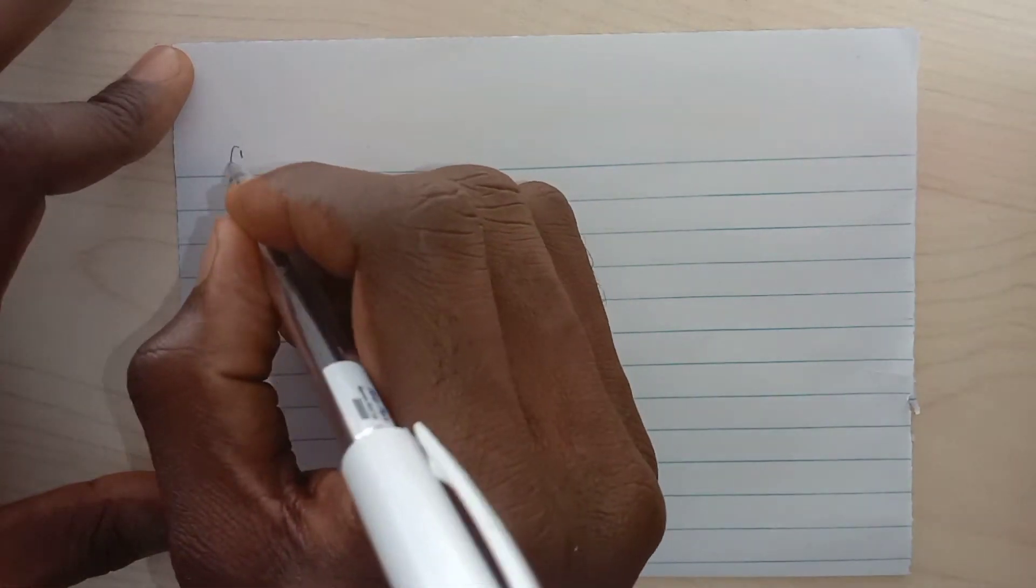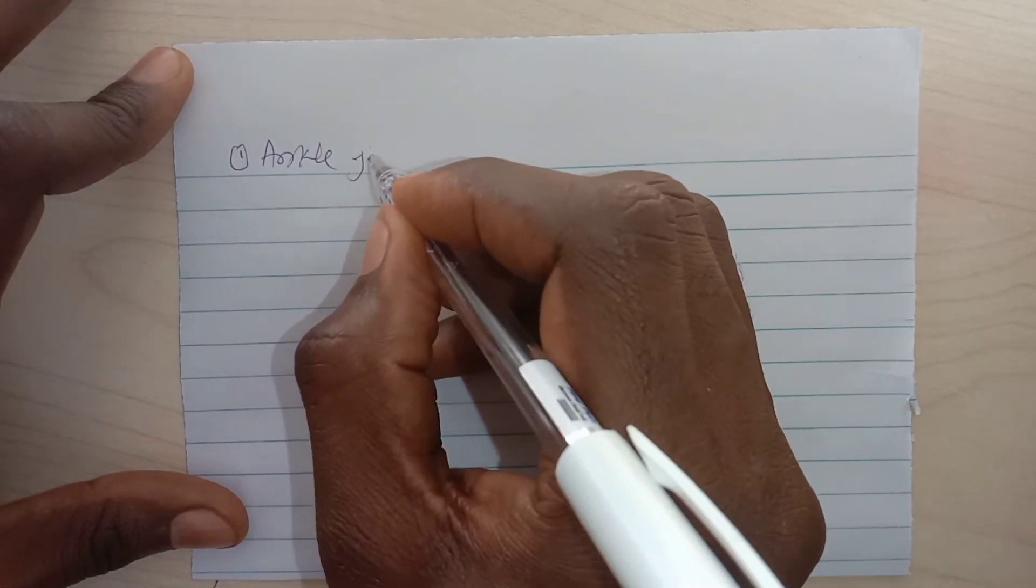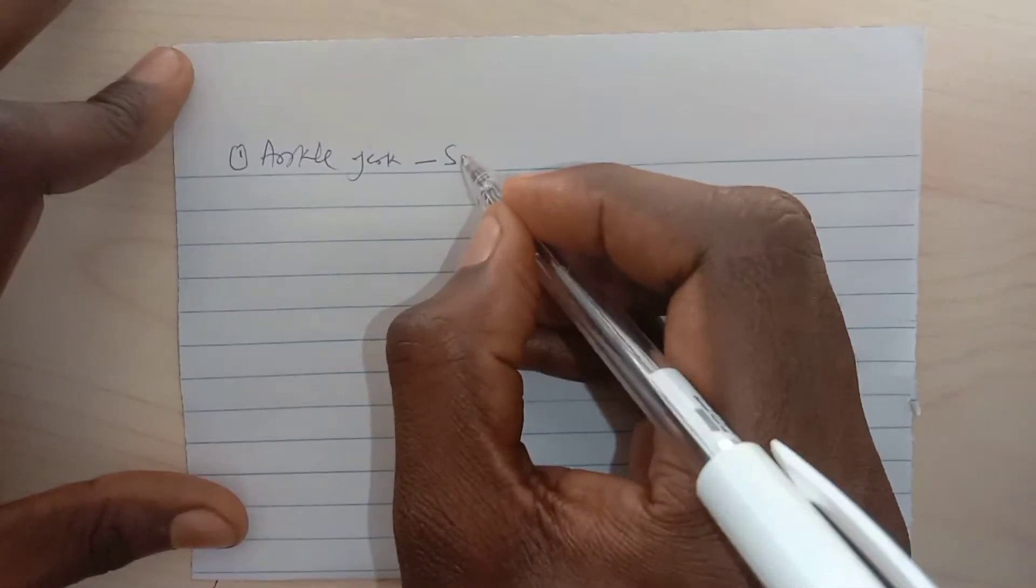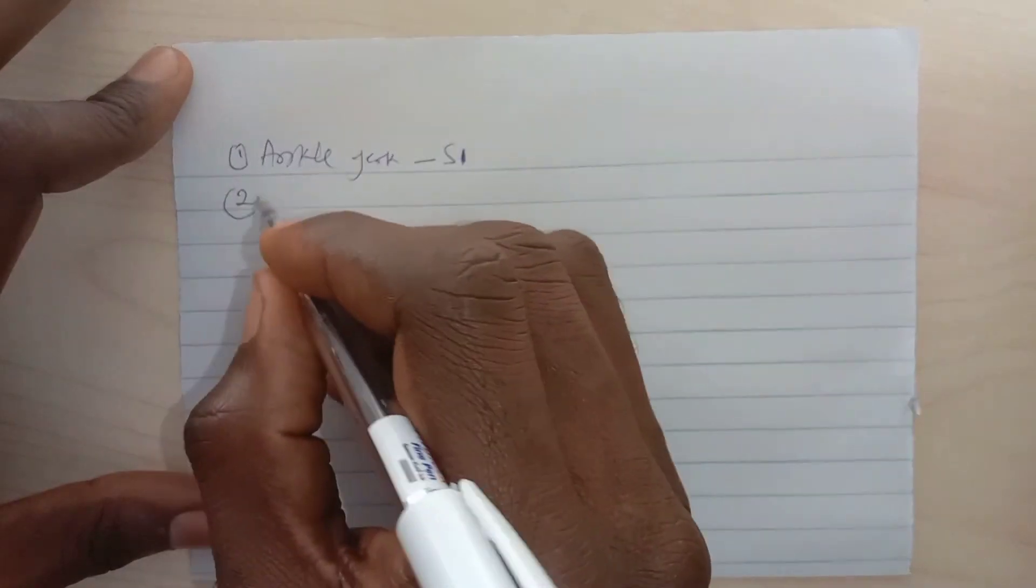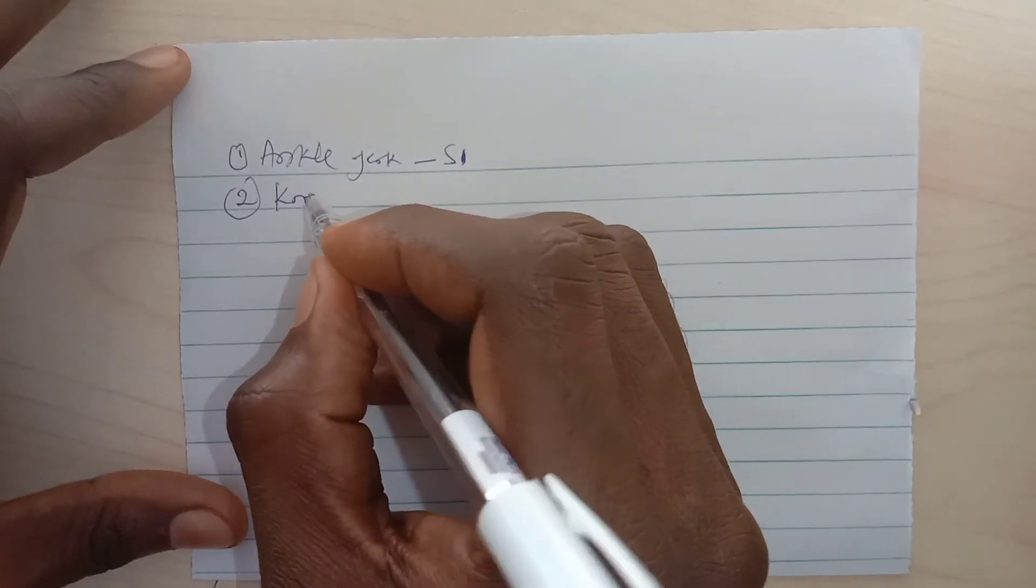This is how to get around the nerve roots of the major tendon reflexes in the body. We're going to talk about the ankle jerk which is mainly S1, then talk about the knee jerk.